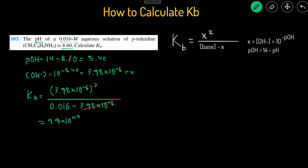And that's how you would solve for the Kb of a weak base if you were given the concentration and if you're given either the OH or the pH or the pOH.